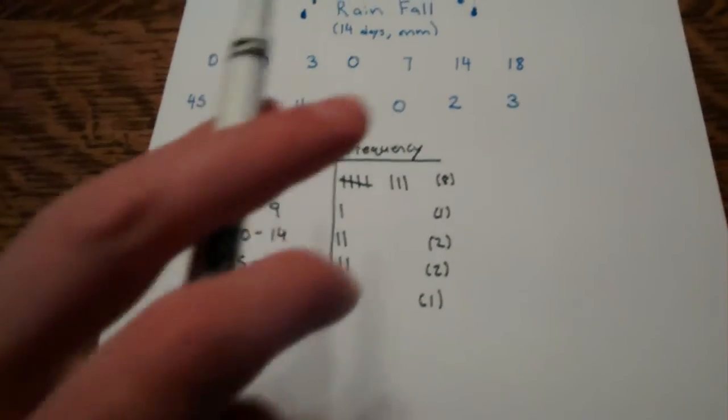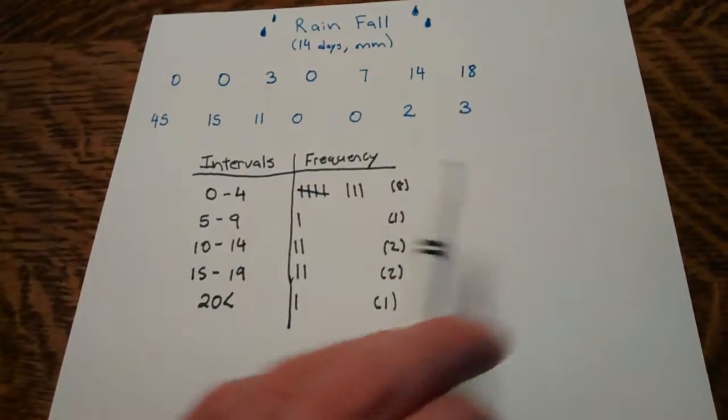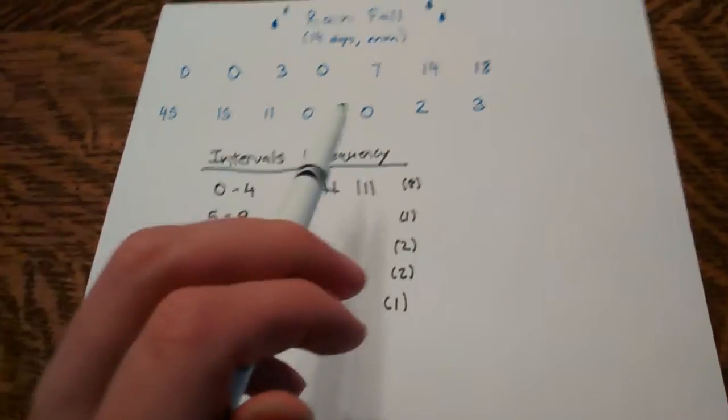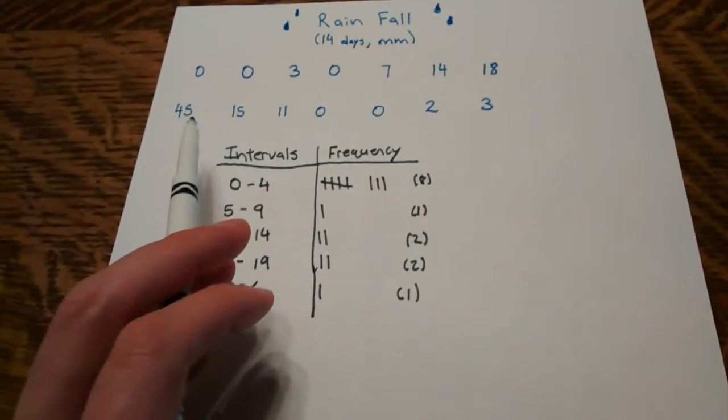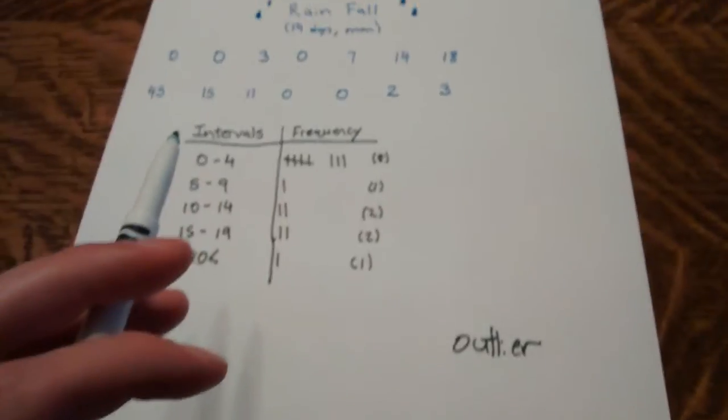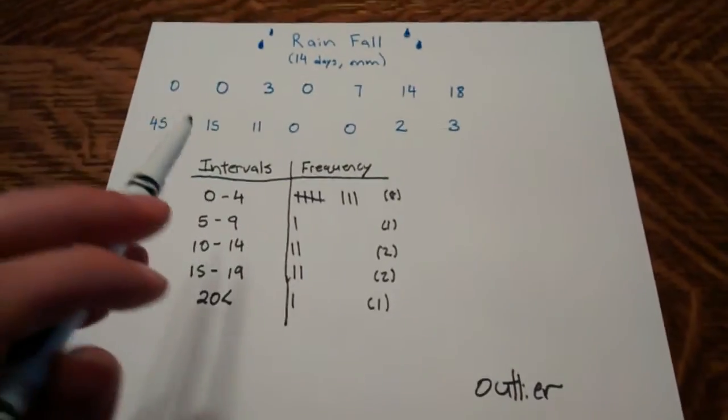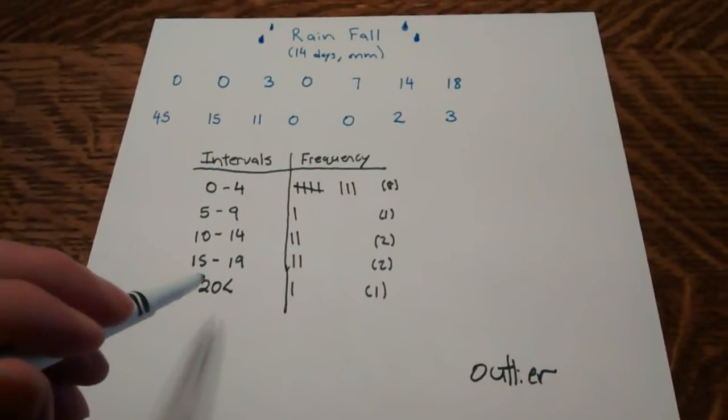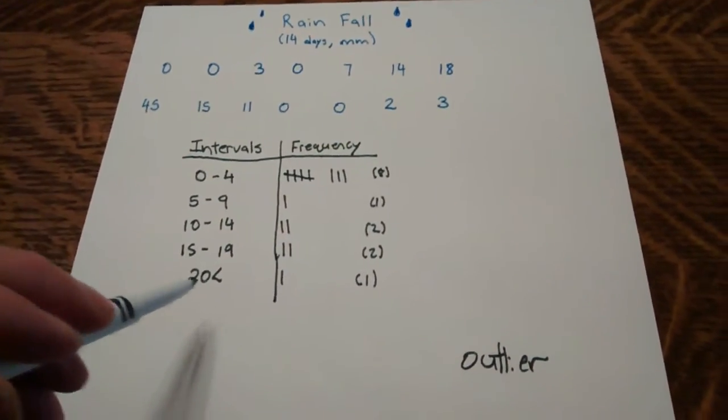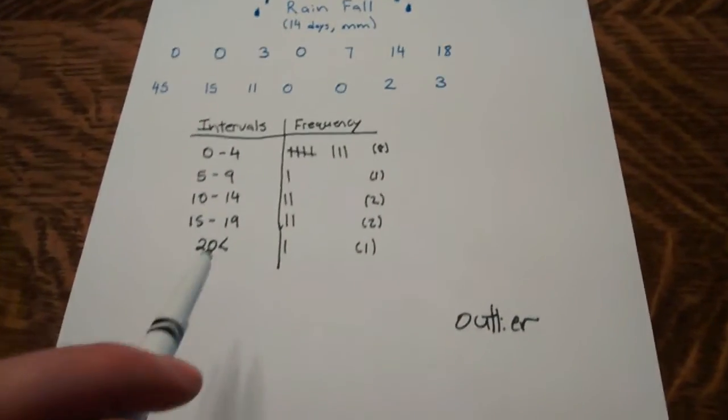And just so you know for future reference, if you look here, all the data is between 0 and about 20. But then this data here, 45 appears. And that's what's known as an outlier. Maybe something that's really low or something that's very high. So to solve this, rather than doing 20, 24, 25, 30, and all up, I just put 20 plus.